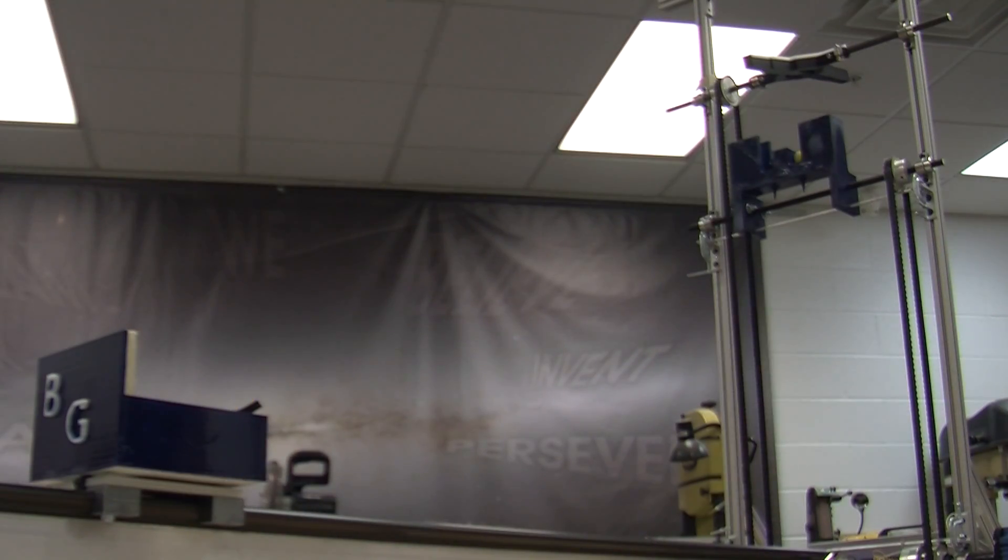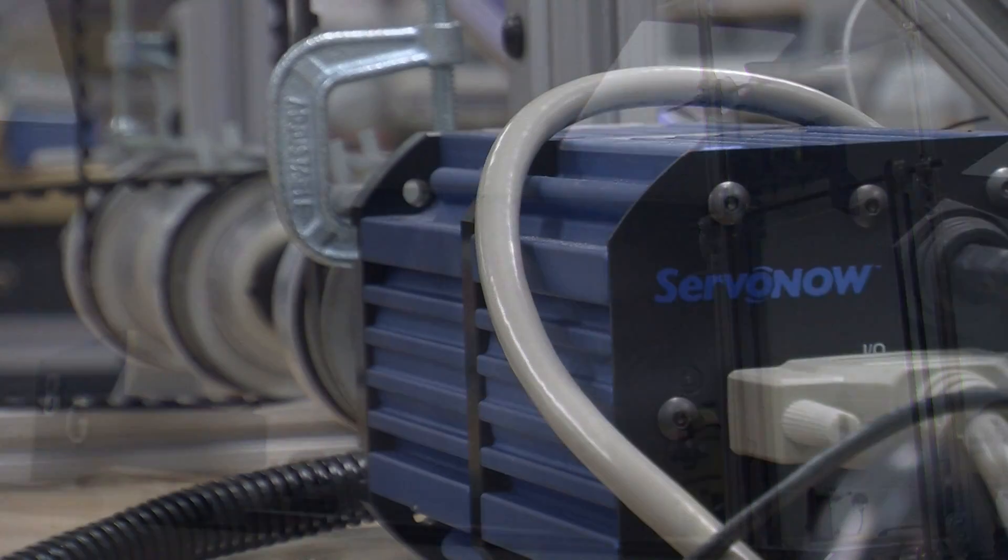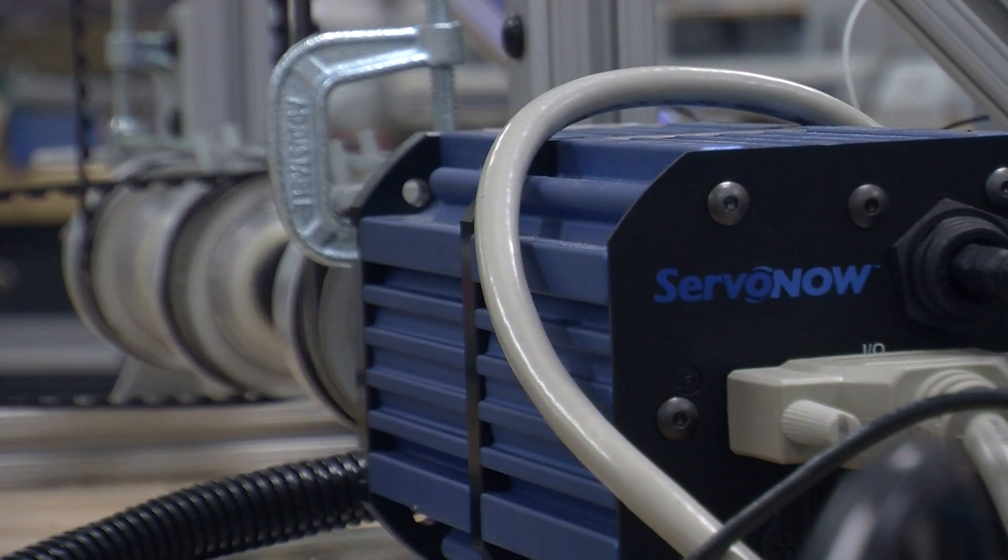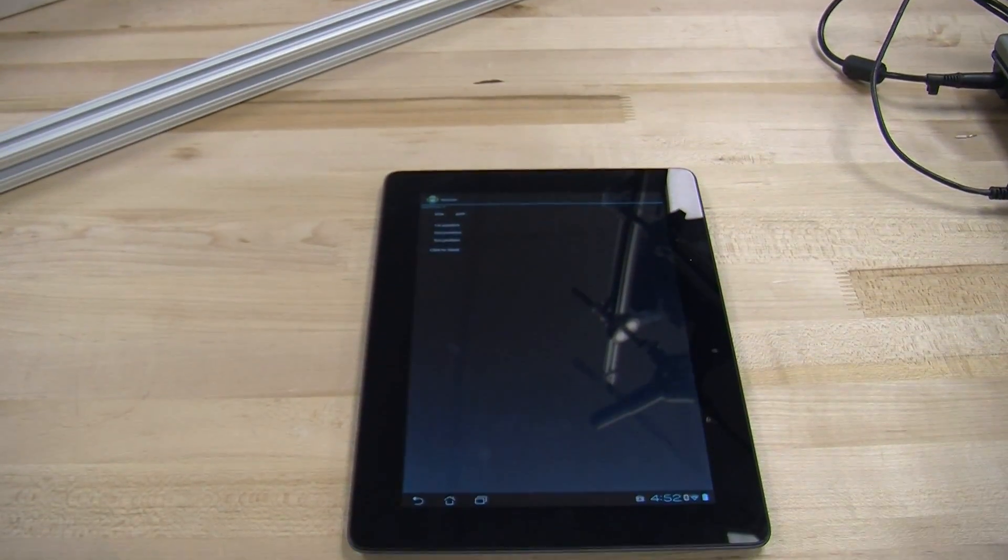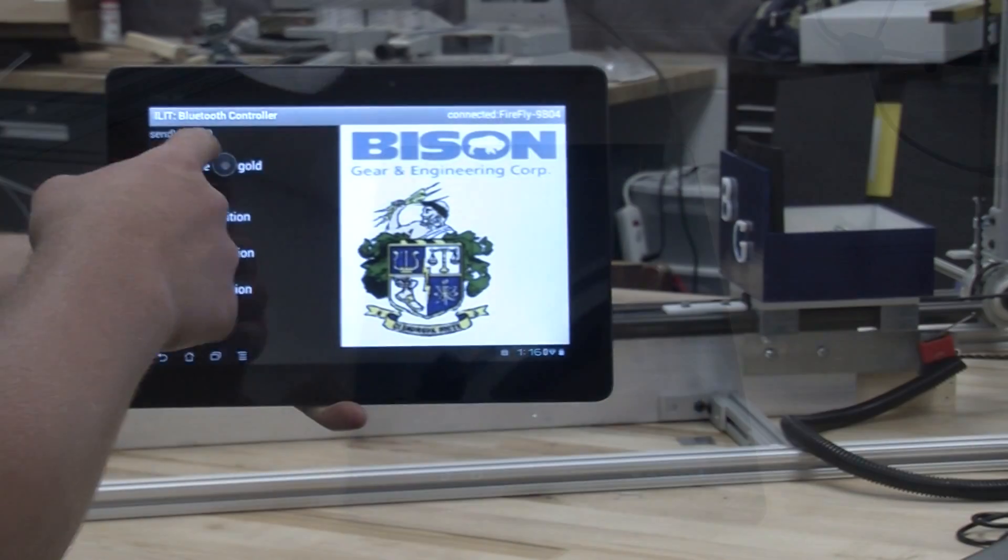The purpose of the machine is to deliver a gumball to a waiting recipient. The entire machine is controlled by one Bison Gear ServoNow motor. The user enters information onto a tablet which is then sent via Bluetooth to